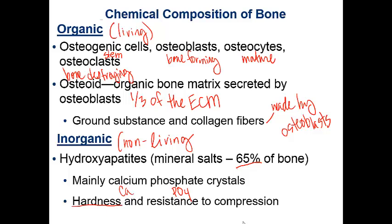It is very important that there is a combination of organic and inorganic matrix elements so that bone can be durable and strong without being brittle. The decrease in some of these elements over time as we age accounts for certain diseases like osteoporosis.